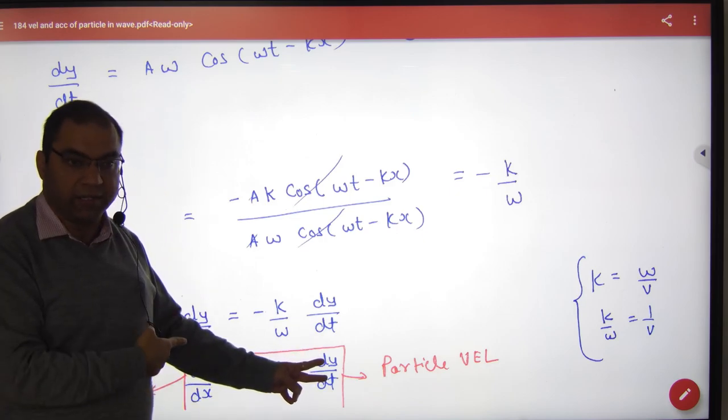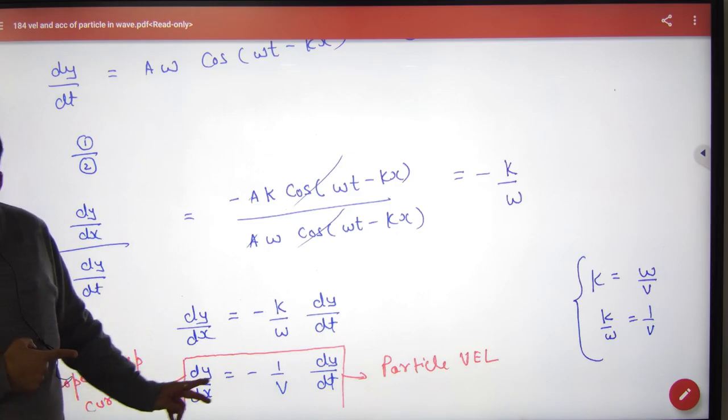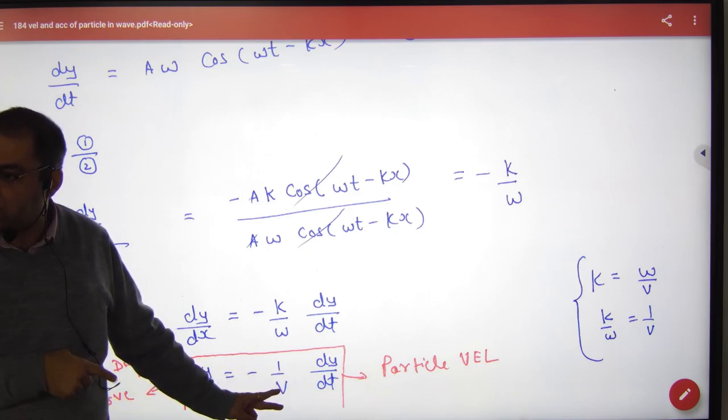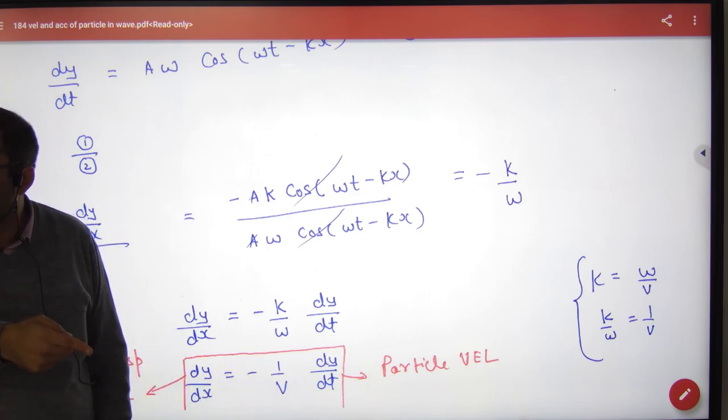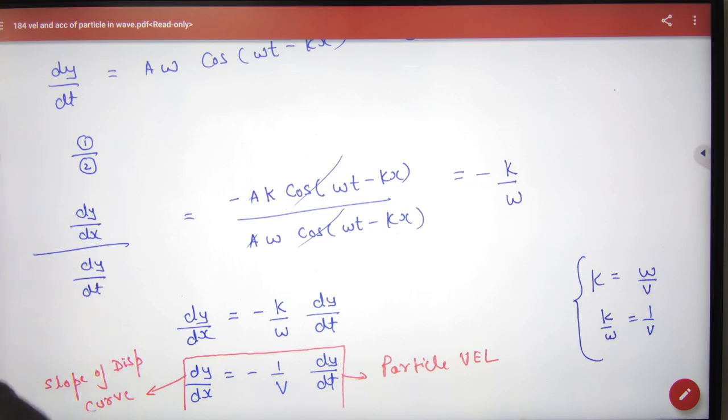You will ask, in that snapshot what is the particle velocity? You will remove it from dy by dt. So the slope and the wave velocity give the particle velocity. If there is an objective, the NCERT will not come.